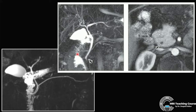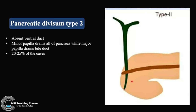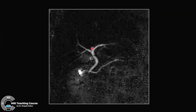These are examples where you can see the minor papilla and the duct of Santorini (minor duct), and a thin line representing the major duct — there is no communication at all. On cross-sectional images, just look through the pancreas and see whether it is draining into the minor papilla. Pancreatic divisum type 2 has an absent ventral duct, seen in 20 to 25 percent of cases; the minor papilla drains all of the pancreas while the major papilla drains only the bile duct.